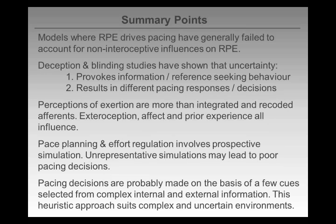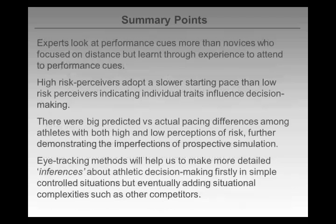To bring this to some kind of summary: models where RPE drives pace generally fail to account for non-interoceptive influences on RPE. Deception and blinding studies have shown these things provoke information-seeking behaviour and result in different pacing responses. Perceptions of exertion do seem to be more than just integrated and recoded afferents — extraceptive information, emotion, prior experience, all change the way that we perceive sensations. Pace planning and effort involves prospective simulation, and if you have an unrepresentative simulation — perhaps a poorly coded prior memory — that might lead to a poor pacing decision. Pacing decisions are probably made based on few cues, and it's quite likely that athletes use heuristics rather than full rationality.